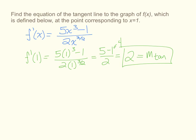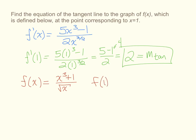Normally we could use the point-slope form of our linear equation to find the equation of the line. However, we are only given the x value. In order to find the y-coordinate, we need to go back to the original function, f of x equals x cubed plus 1 over the square root of x. Substituting x equals 1, f of 1 equals 1 cubed plus 1 over the square root of 1, which simplifies to 2.